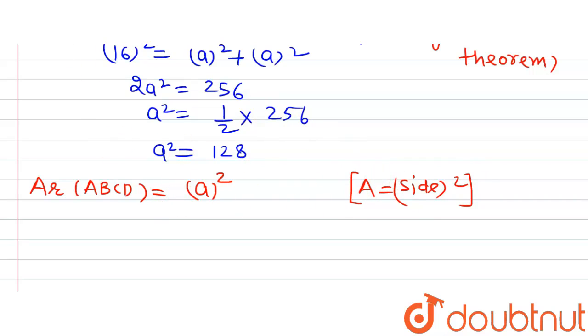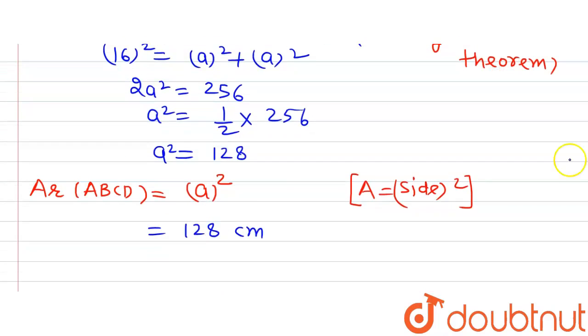Now we have the value of A square. A square is equal to 128, that means area of square ABCD is equal to 128 cm square. So we have area ABCD is equal to 128 cm square and this is our answer to this question.